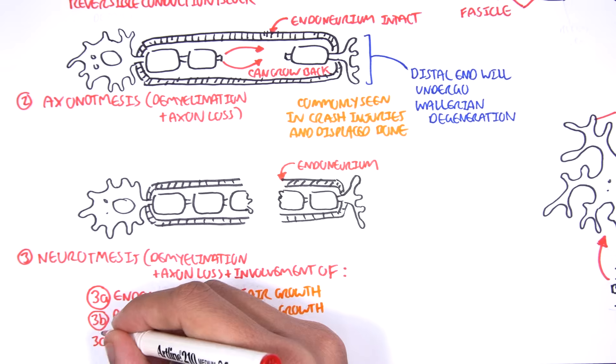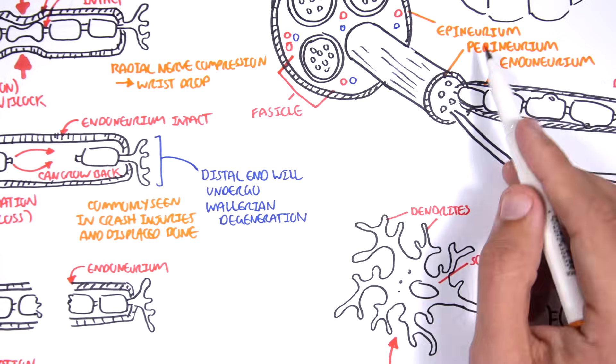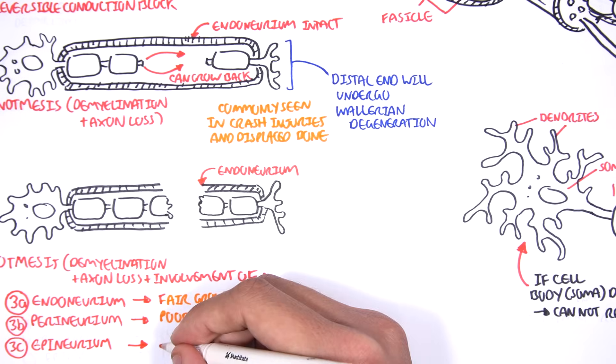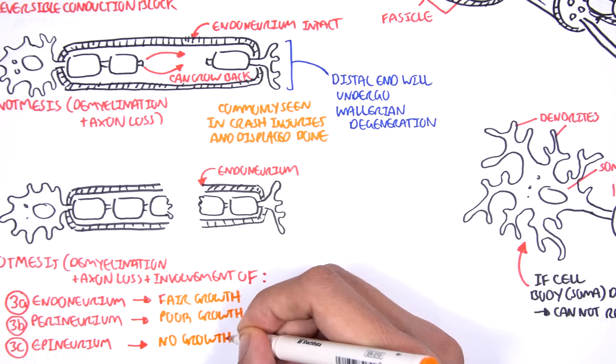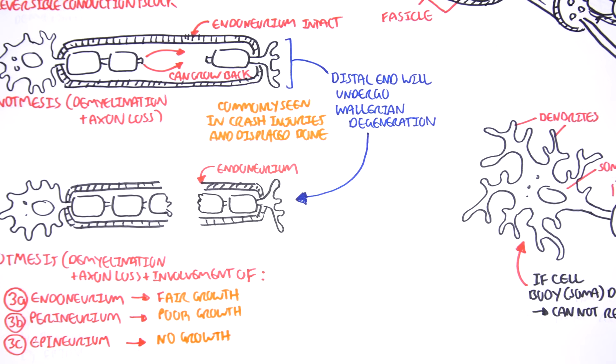And finally, if you have epineurium involvement, so remember, the epineurium is the one surrounding the whole nerve, you will have no growth. And like always, the distal ends of the neuron that is basically sloughed off will undergo degeneration no matter what.